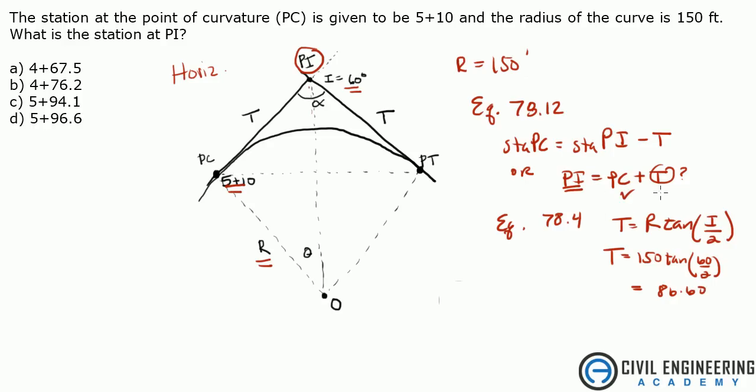So, we know PC, we know T, let's just plug it in. And then PI, station at PI is going to be PC, which is 5+10, or 510 feet, plus the 86.60 feet, which is 596.60, or 5+96.60.